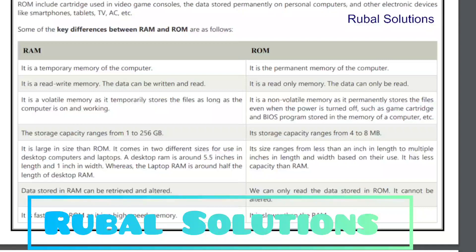RAM: It is a volatile memory as it temporarily stores the files as long as the computer is on and working. ROM: ROM is a non-volatile memory as it permanently stores the files even when the power is turned off, such as a cartridge and BIOS program stored in the memory of the computer. RAM: The storage capacity ranges from 1 to 256 MB or GB. ROM: Its storage capacity ranges from 4 to 8 MB.